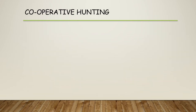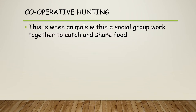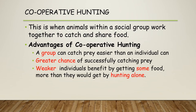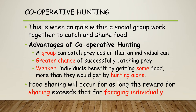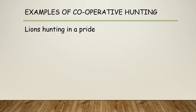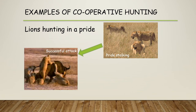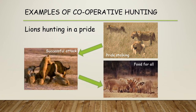Cooperative hunting is another example of animals working together in social groups — that's when they catch and share food together as a group. The advantages are that the group can catch prey more easily than an individual can, there's a greater chance of successful catching, and weaker individuals also benefit by getting food. Cooperative hunting and food sharing will occur for as long as the reward of sharing exceeds that of foraging individually. A prime example is lions hunting in a pride — they stalk together and a successful attack means food for all, though they feed within the dominance hierarchy.